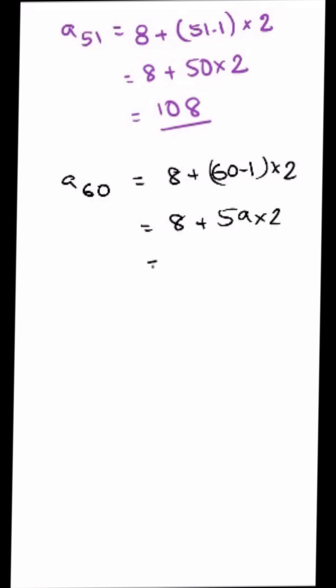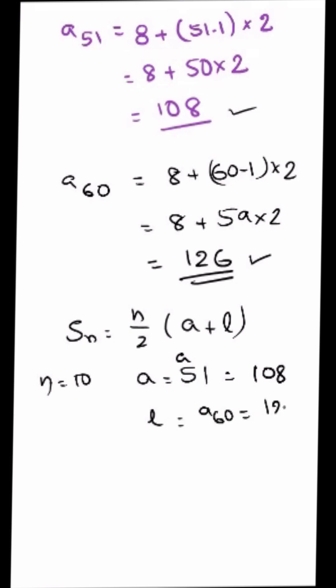So we have the formula S_n is equal to n by 2 into (a plus l). Here n is equal to 10, that's the last 10 numbers. a is equal to a_51, that's equal to 108. And l is equal to a_60, that's equal to 126.